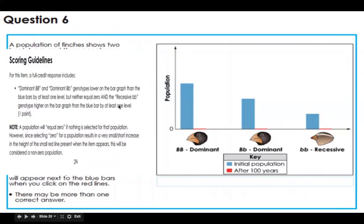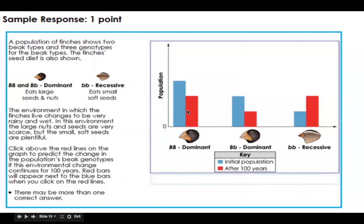Now here's what the state actually said was the answer. Full credit responses include dominant capital B, capital B, and dominant capital B, lowercase b genotypes lower on the bar graph than the blue bars by at least one unit, but neither equal to zero. If I go back, we did that.